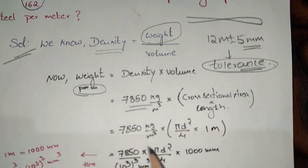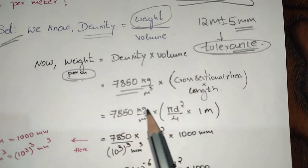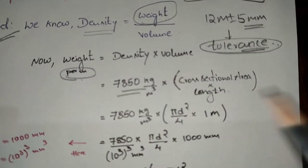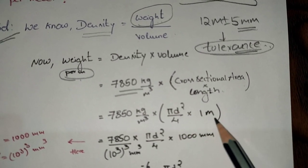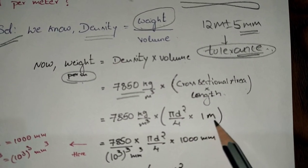So now length is 1 meter. We already know that 7850, into πd²/4 into 1. πd²/4 is the cross sectional area of steel bar. 1 meter is taken as the length because we are calculating per meter.